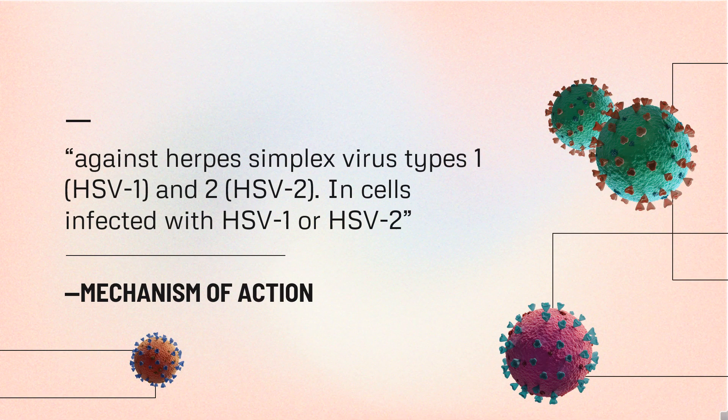Mechanism of Action: Penciclovir has in vitro activity against herpes simplex virus types 1 (HSV-1) and 2 (HSV-2). In cells infected with HSV-1 or HSV-2, viral thymidine kinase phosphorylates penciclovir to a monophosphate form. That phosphate form is then converted to penciclovir triphosphate by cellular kinases. The intracellular triphosphate of penciclovir is retained in vitro inside HSV-infected cells for 10–20 hours, compared with 0.7–1 hour for acyclovir.